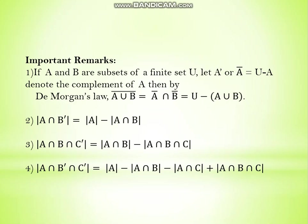For A∩B∩C complement: elements in A and B but not in C — from A∩B we subtract the common part A∩B∩C. For A∩B complement∩C complement: elements in A but not in B and not in C — we subtract the common parts between A and B, and between A and C, then add back A∩B∩C since it was subtracted twice.